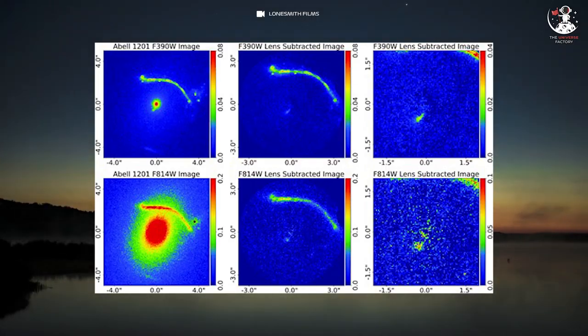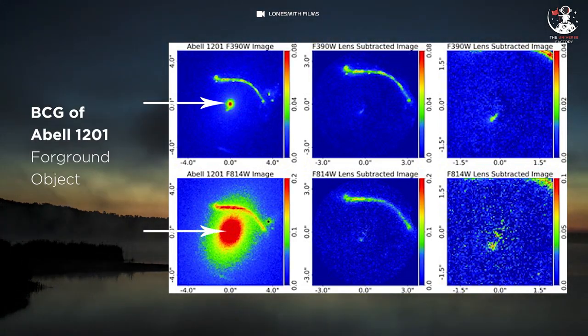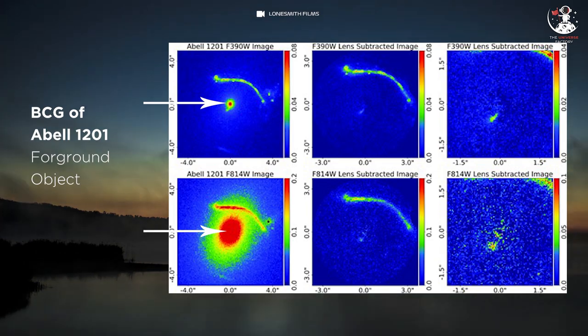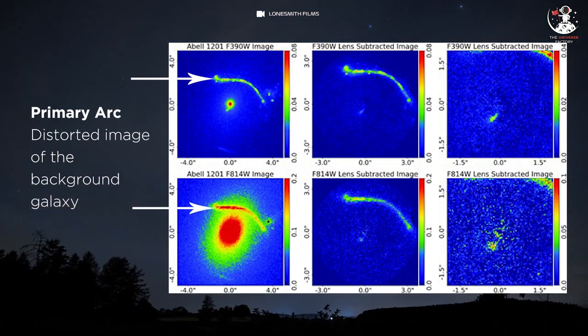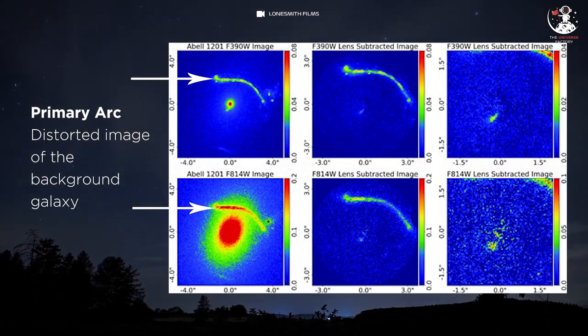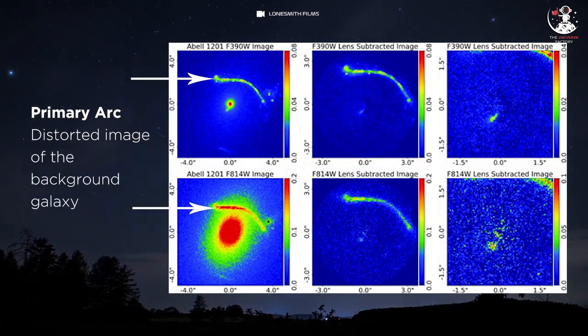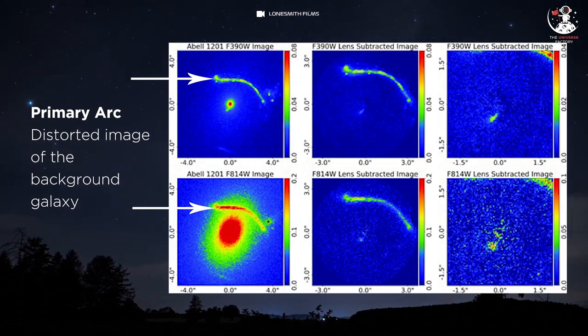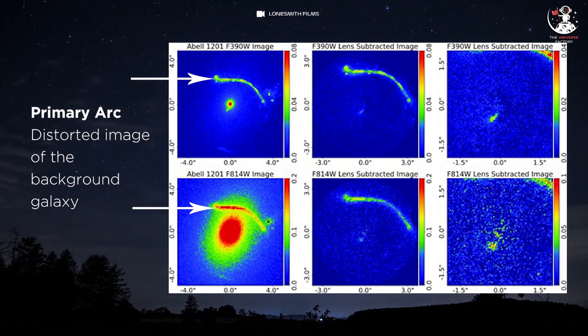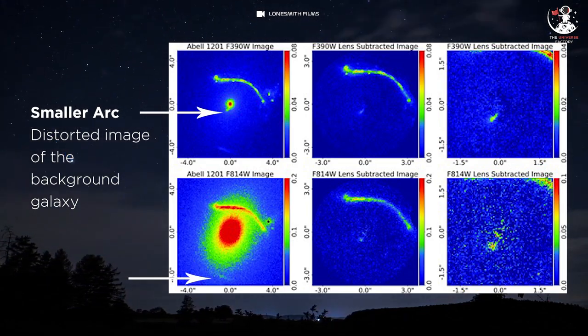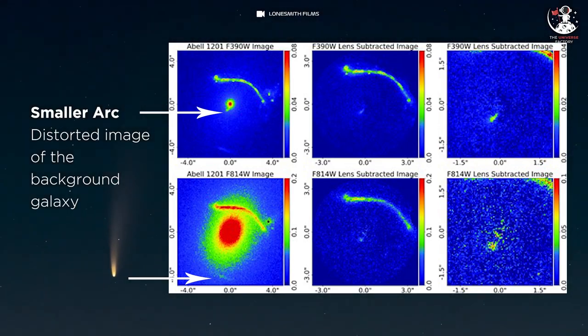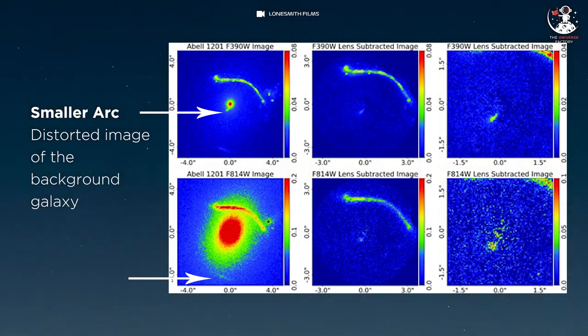Now let's consider this image. Here you can see three important things. In the central bright region is a galaxy that acts like a lens to distort and magnify the distant galaxy. Above the central bright region can be seen a giant arc. This primary arc is the distorted image of the background galaxy that is being lensed. Below the central region is the smaller arc, which is also the distorted image of the background galaxy.